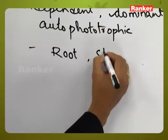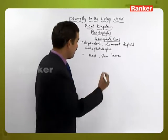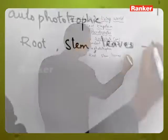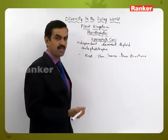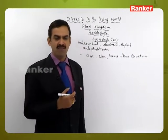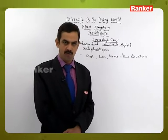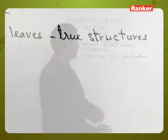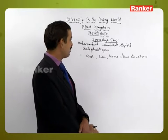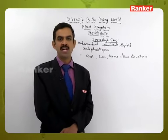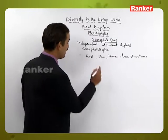The sporophyte plant body has three types of parts: root, stem, and leaves, differentiated into three true structures. When we discuss bryophytes, root, stem, and leaf are not true structures because they do not have vascular tissue and are part of the gametophytic plant body. But in pteridophytes, root, stem, and leaf are true structures because they have vascular tissue and are part of the sporophytic plant body — that is why they are considered true root, true stem, and true leaves.